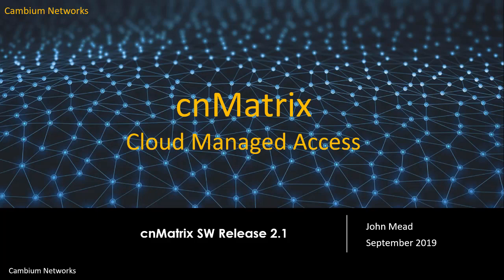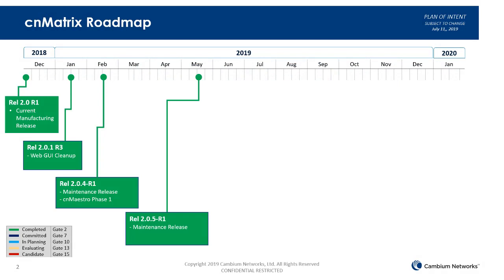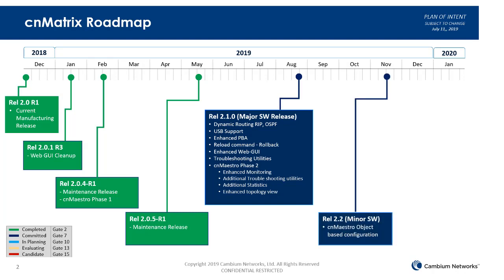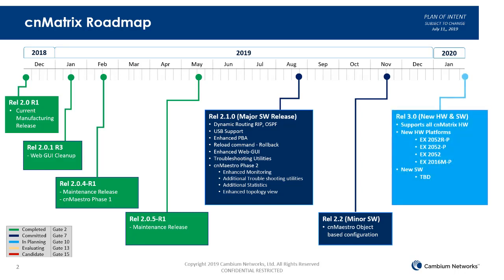Here is our roadmap. This is what we have released up until 2.1. Release 2.0.5 is our most recent release available on our support site today. Starting just a couple days ago, August 30th, we have now posted release 2.1. Coming up next is release 2.2, a fairly important software release that provides a GUI interface for CN Maestro users when managing CN Matrix. Also coming in Q1 of next year is release 3.0, which will supply some new hardware platforms.